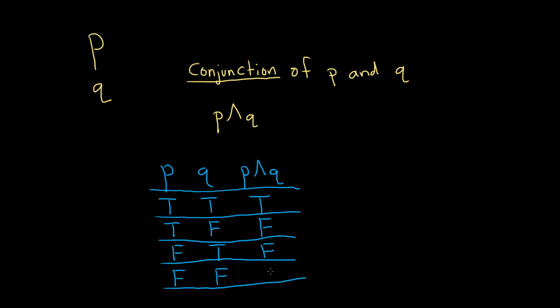And if they're both false, then it's definitely false. So this would be the truth table for p and q. Again, p and q is only true when both p and q are true.